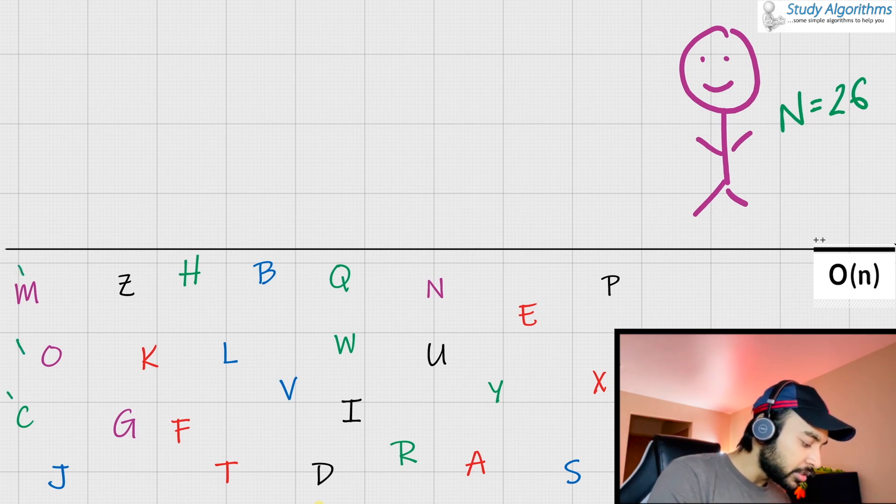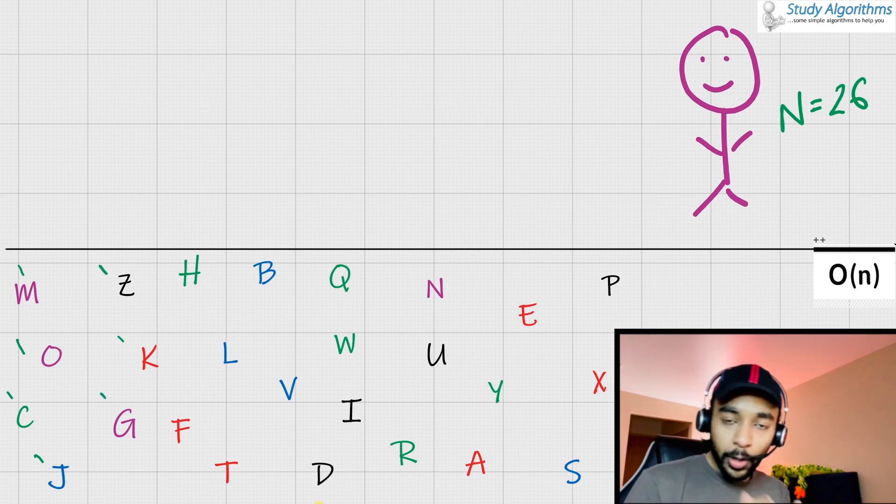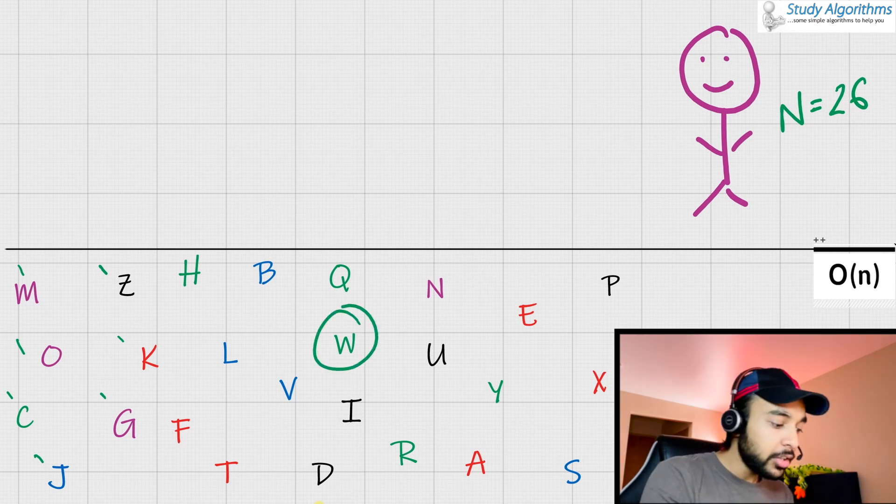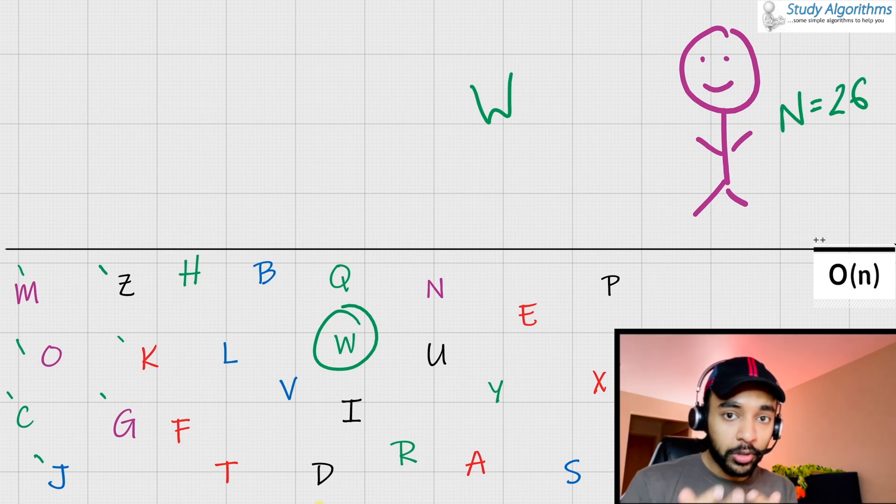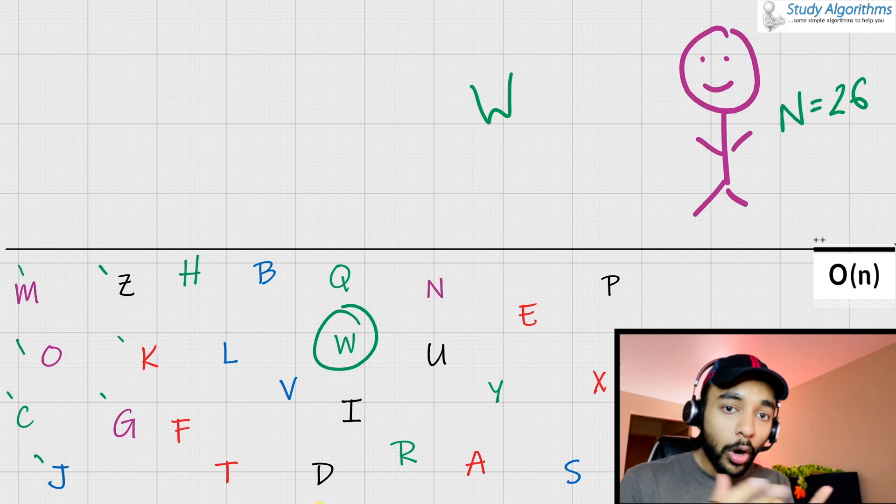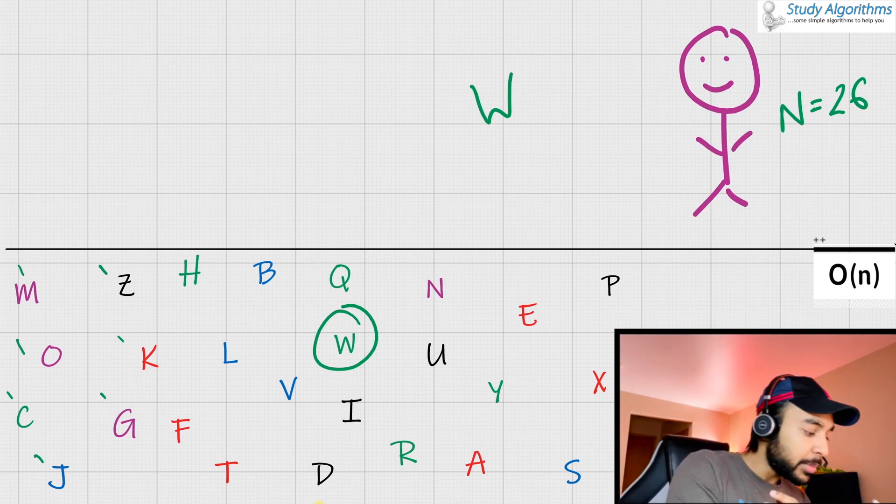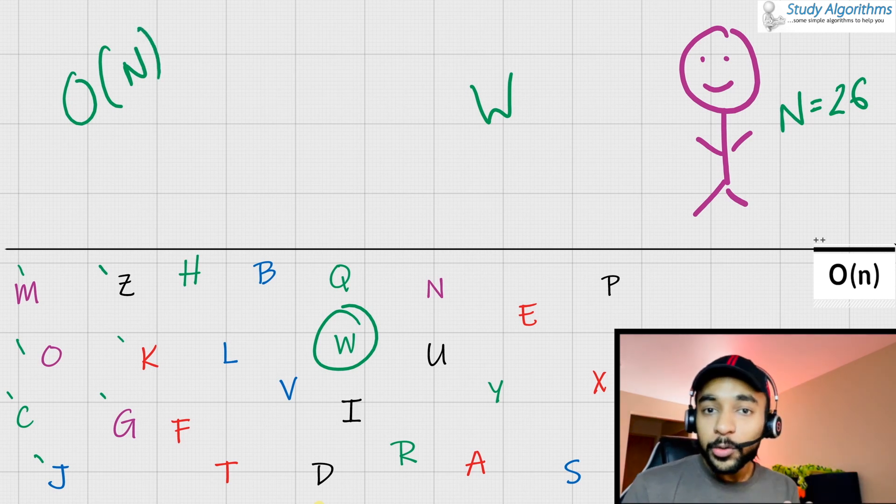Going forward like this, you would eventually encounter the letter W and you would bring it up. But since we are talking about the worst case, it could be possible that you are looking through all of the characters before you could find out W. In a way, what you are doing is you are looking through N characters. That means this is known as the order of N or big O of N.